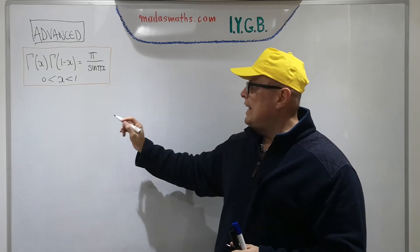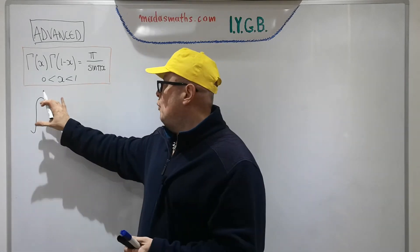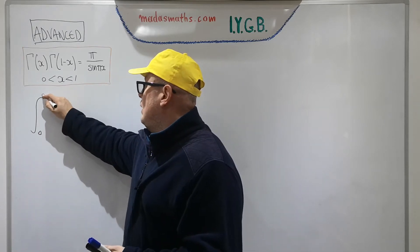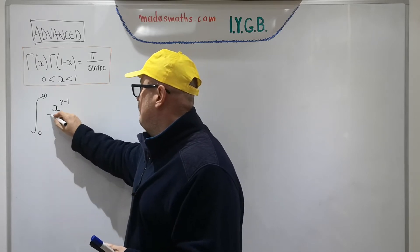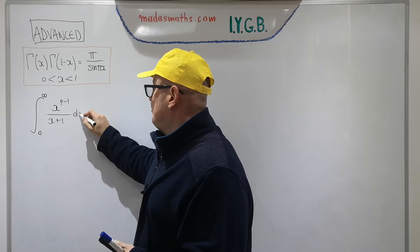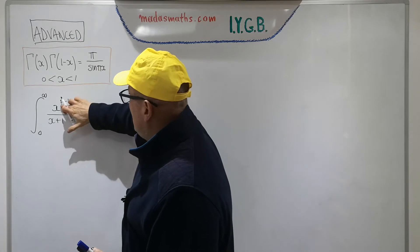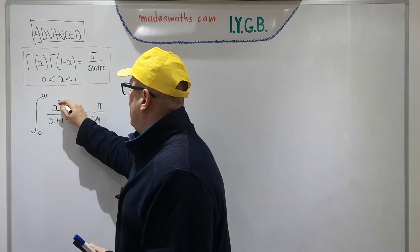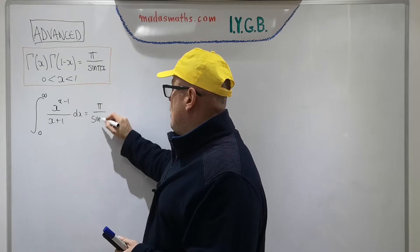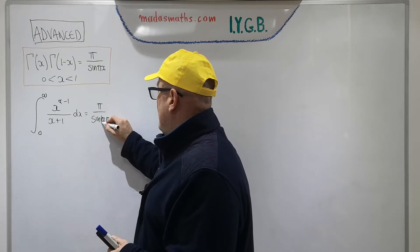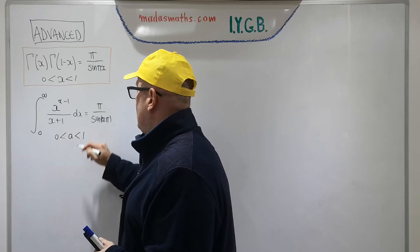I've got this one in the lecture that I've done by contour integration. We derived that the integral from 0 to infinity of x to the power of a minus 1 over x plus 1 dx equals pi over sine a pi, so long as your a is a real number between 0 and 1.